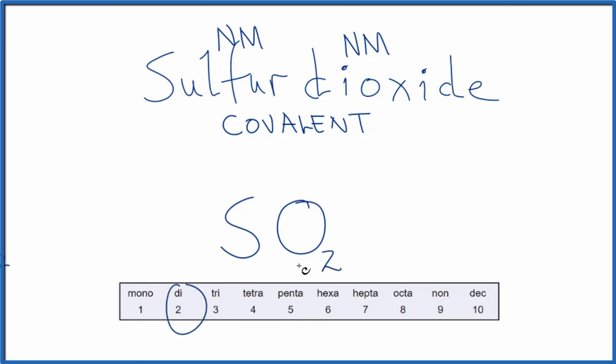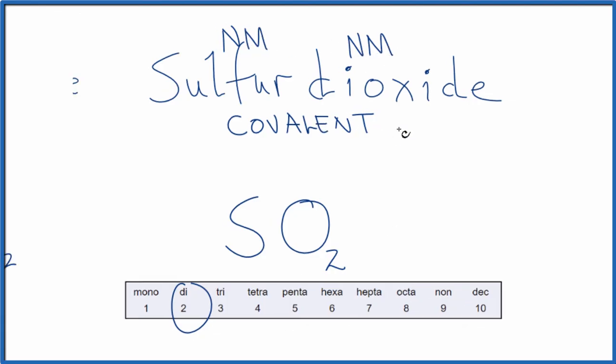Di means two, so we'll have two oxygens. And it's just sulfur, so we have one of those, but we don't write the one. So this is the formula for sulfur dioxide. And we use these prefixes because we had two nonmetals, so covalent or molecular compound.